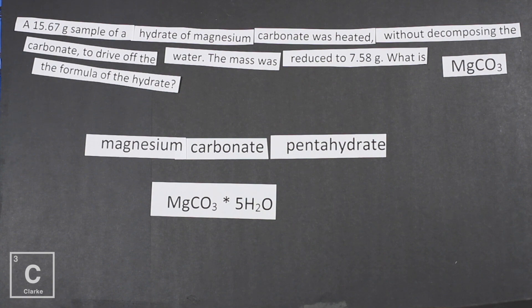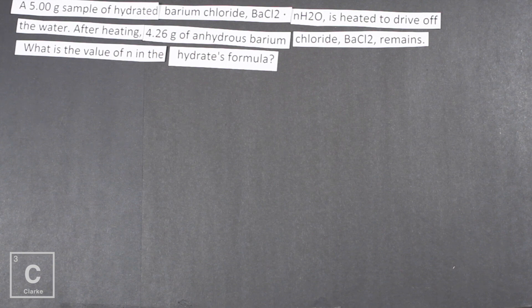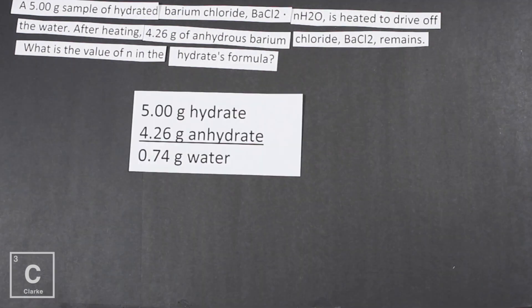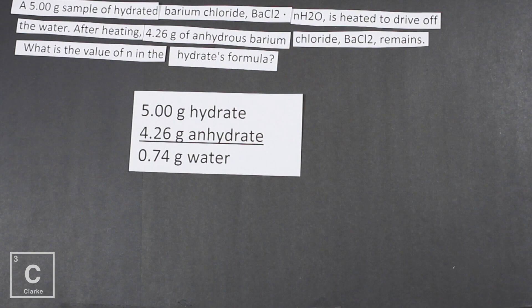Let's look at another problem. A five gram sample of hydrated barium chloride, BaCl₂, with some number of moles of water — because remember, a hydrate has moles of water trapped inside and we don't know how many. It's heated to drive off the water. After heating, 4.26 grams of anhydrous barium chloride, BaCl₂, remains. What is the value of N in the hydrate's formula? If we analyze this: the hydrate is 5 grams, the anhydrate is 4.26 grams, so subtracting gives us 0.74 grams of water driven off.